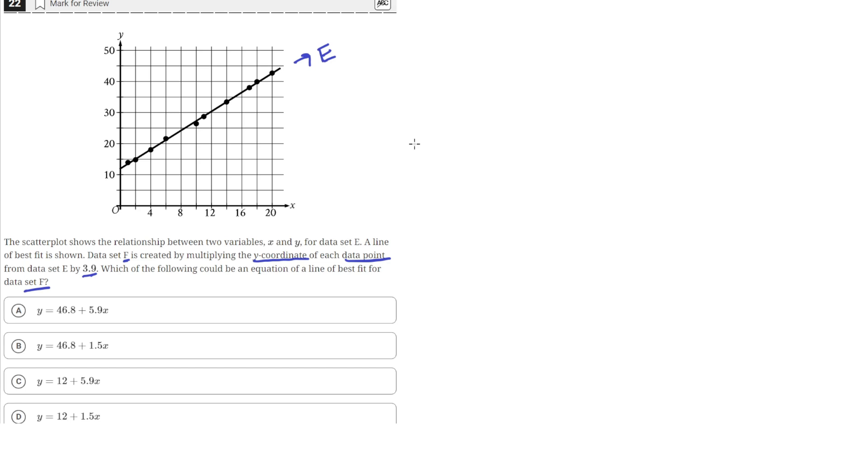What we can do is find the slope and the Y intercept for data set E. Data set F is data set E, but with its Y coordinates multiplied by 3.9. So, let's just choose two points on this line. We won't look at the actual data set. We're just going to look at the points on the line.